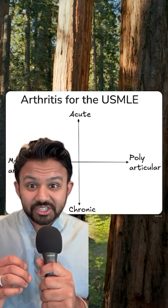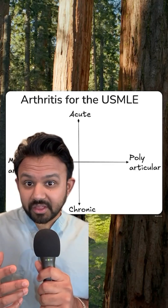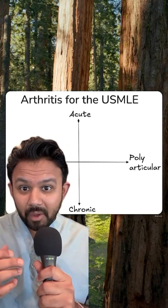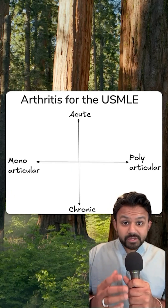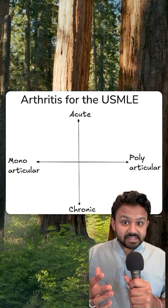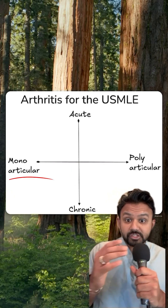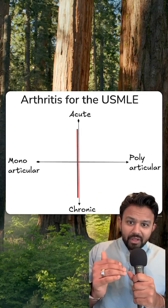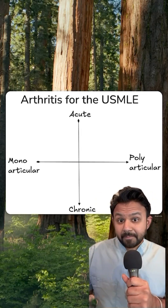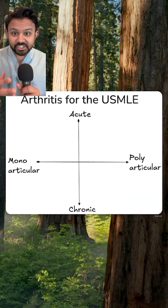Arthritis questions are very high yield on the USMLE. Here's how I approach them. The first thing we have to do is define the axes. On the horizontal axis, you see monoarticular versus polyarticular. On the vertical axis, you see the tempo: acute versus chronic. Let's go through each of these quadrants.